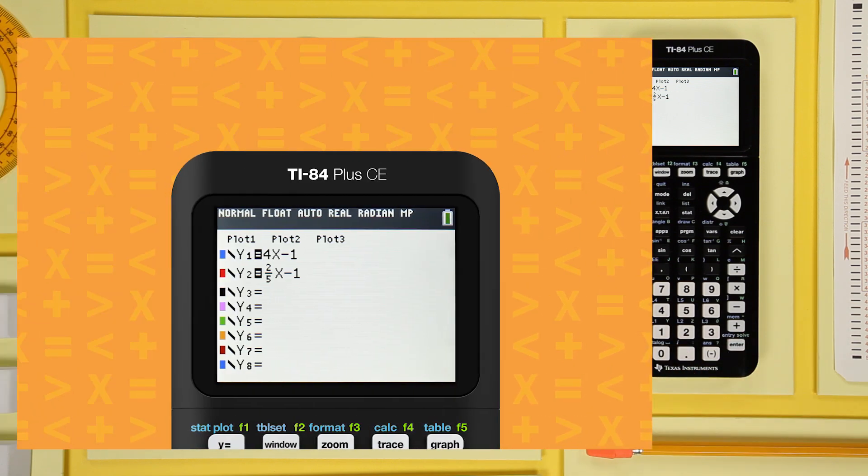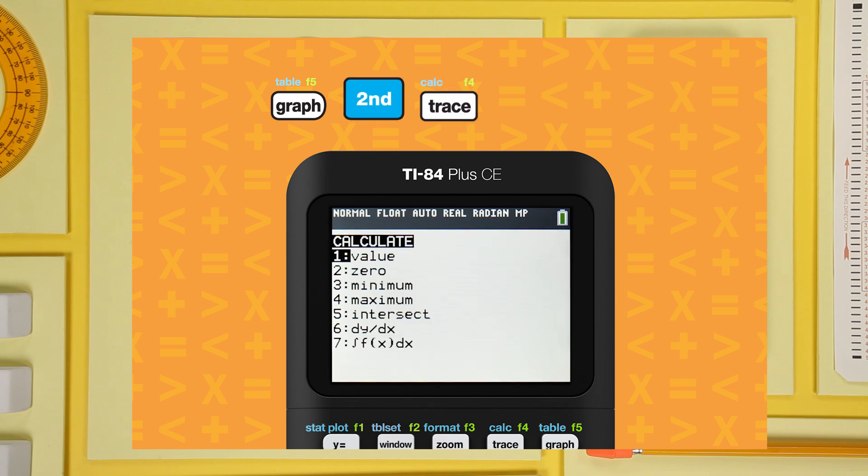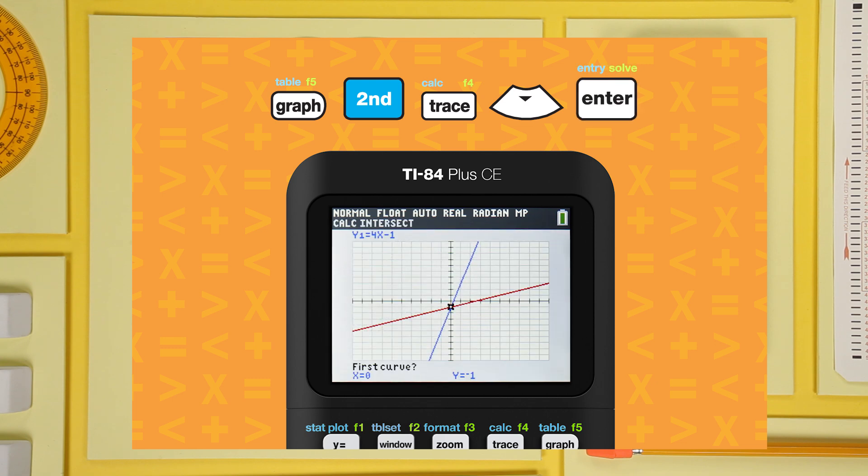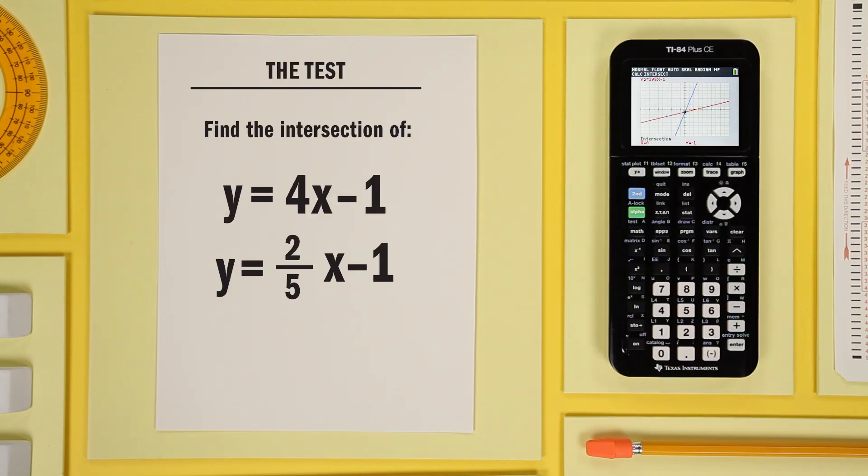The rest is just like before. And there you have it. Those lines intersect at x equals 0 and y equals negative 1.